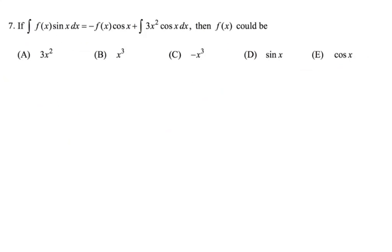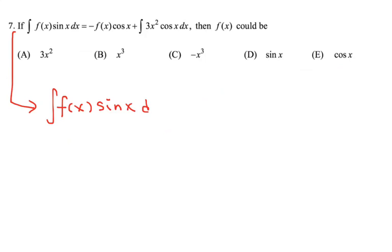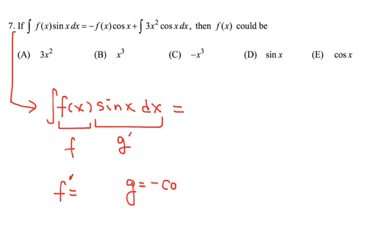Let's move on to number 7. This is similar to what we have done earlier. We have the integral of f of x times sine of x dx equal to the negation of all these things given. What could f of x be? By using integration by parts on the integral of f of x sine of x dx — if we assume sine of x is g prime and f of x is f — then g would be negative cosine of x.